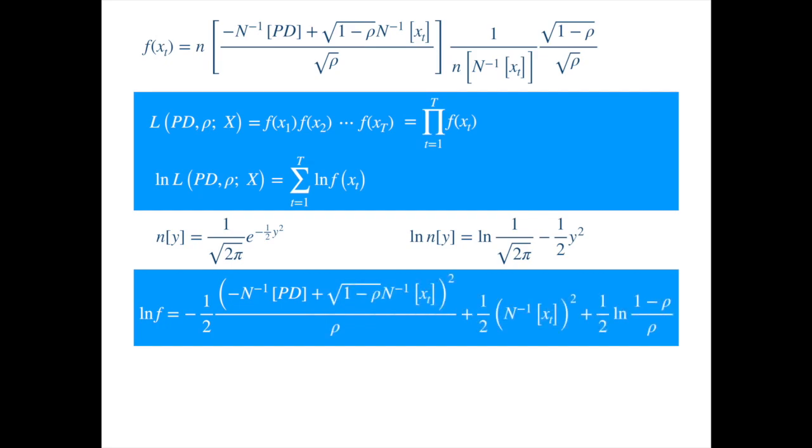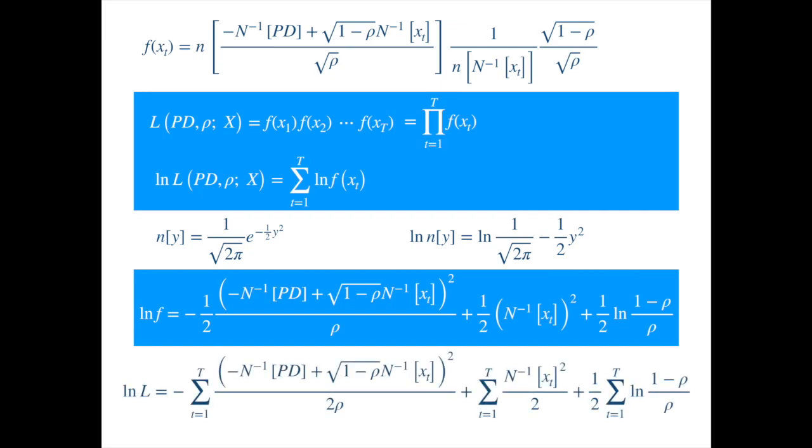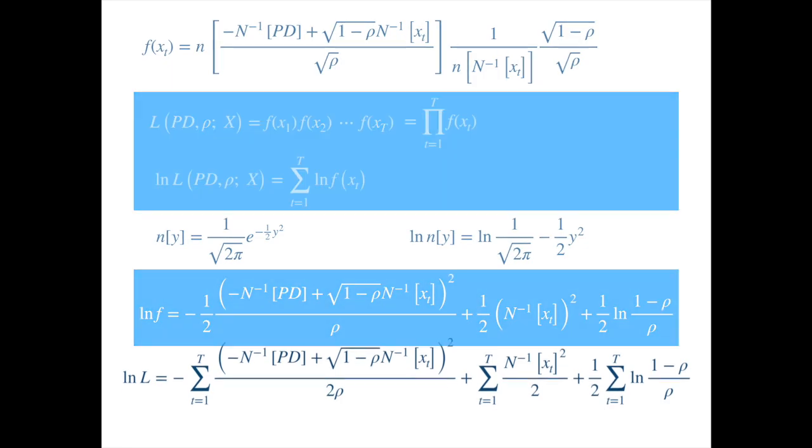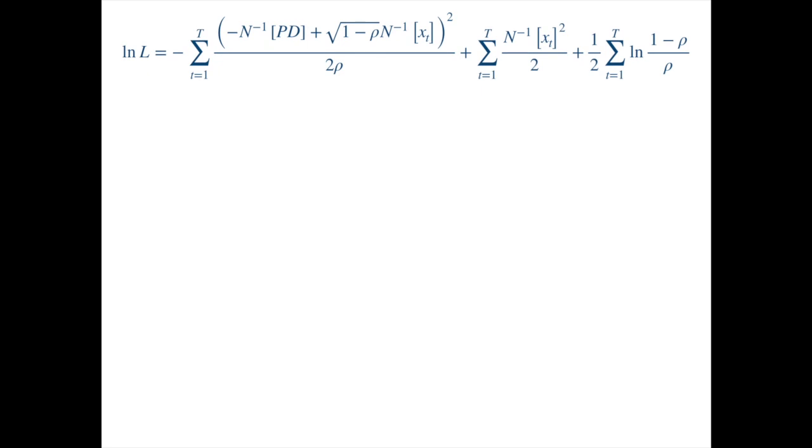And recall that the log likelihood is the sum of T such terms, so we get. We now need to maximize this with respect to the PD and the correlation. We will start with the PD.